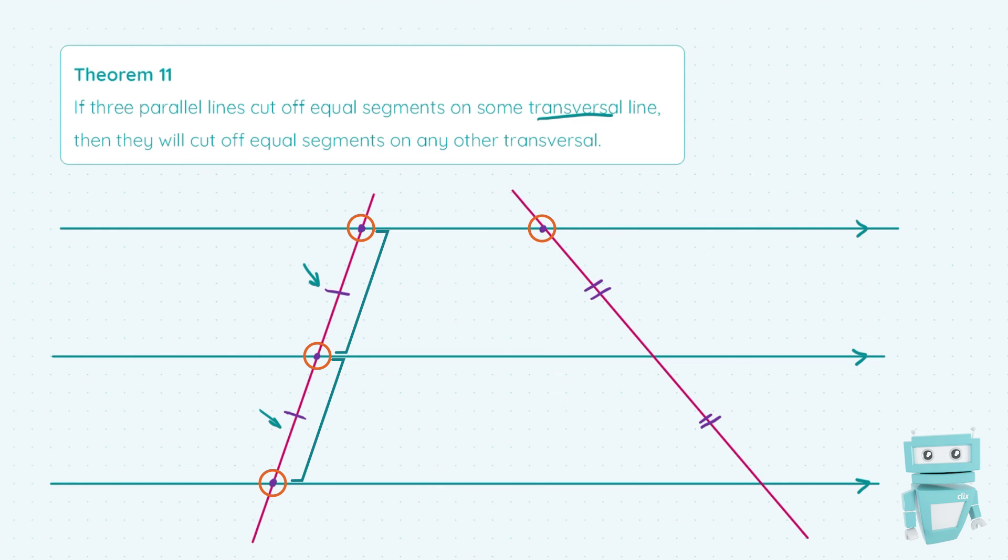So between this point and this point, and also this point down here, we have two equal segments being cut off, once again, between the parallel lines.